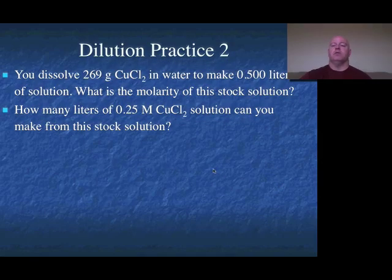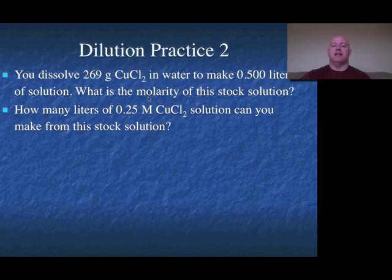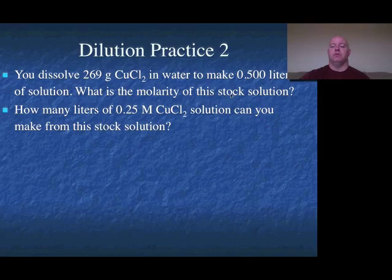Dilution practice two is a little different. First, we're going to dissolve a certain mass in grams of copper chloride to make 5 liters — so step one isn't diluting, it's actually making a solution, which we call a stock solution. Step two is then doing the dilution. Two parts to this problem — go ahead and work through both parts, pause the video, and we'll come back in a second.